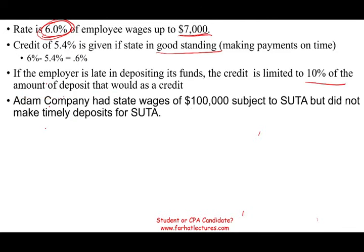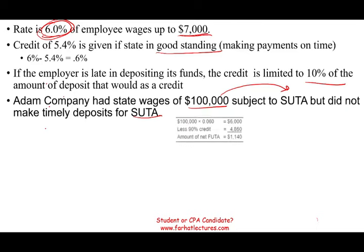Adam Company has state wages of $100,000 subject to SUTA but did not make a timely deposit for SUTA — so Adam is not in good standing with the state. Adam's federal liability starts at $100,000 times 6%, which is $6,000. However, Adam will lose 90% of the credit.